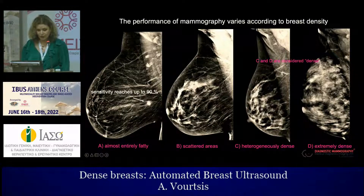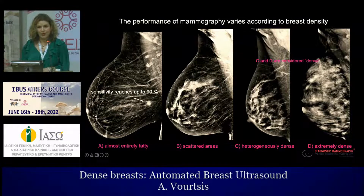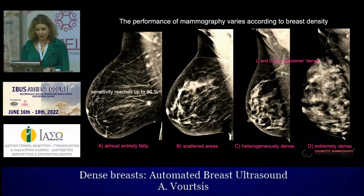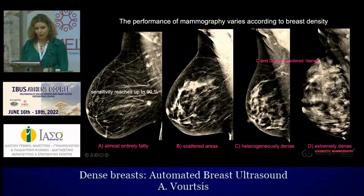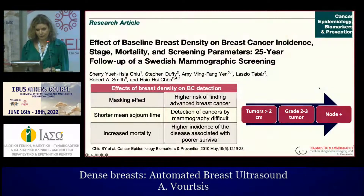In women with heterogeneous dense breasts, we can see distortions, especially with DBT, but it is more difficult to recognize non-calcified masses. And in women with extremely dense breasts, it is much more difficult.